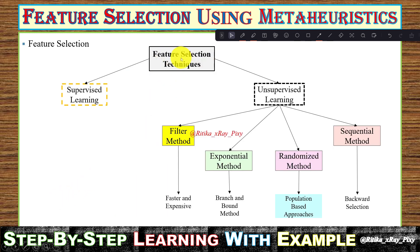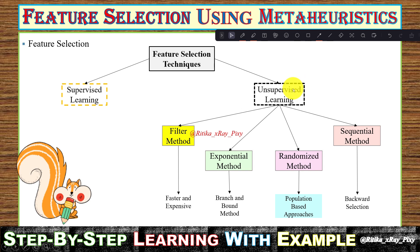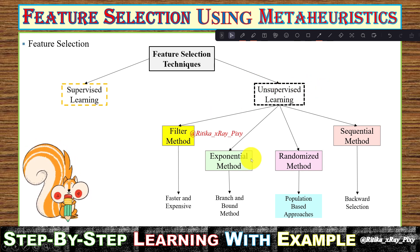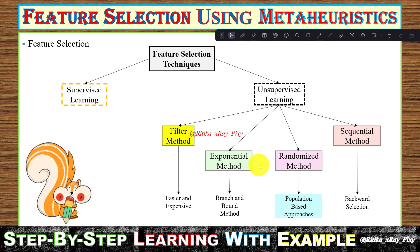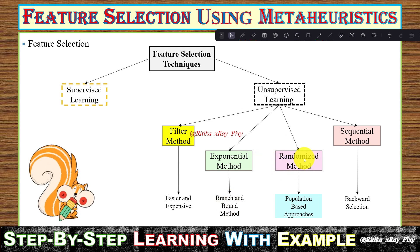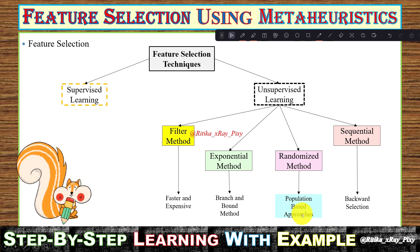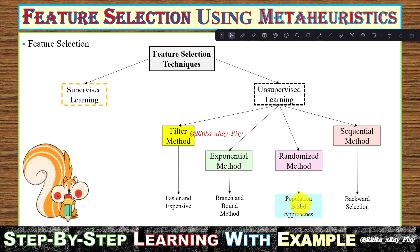In unsupervised learning there are different feature selection techniques: the filter method, the exponential method, the randomized method, and the sequential method. The filter method is faster but can be expensive. The exponential method includes approaches like branch and bound. The randomized method uses population-based approaches, that is, meta-heuristic algorithms.